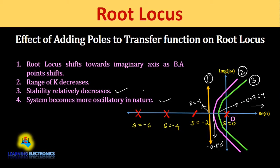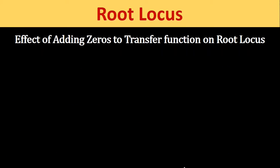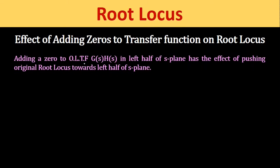Next we will study the effect of adding zeros to the transfer function on the root locus. When we add a zero to the open loop transfer function G(S)·H(S) in the left half of the S plane, it has the effect of pushing the original root locus towards the left half of the S plane, which increases system stability.